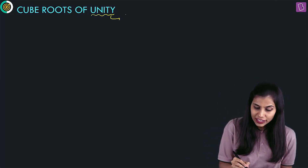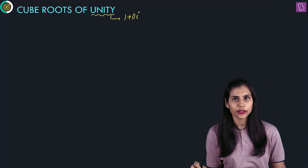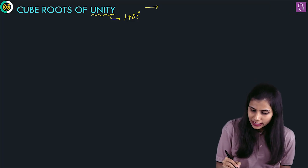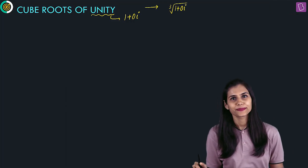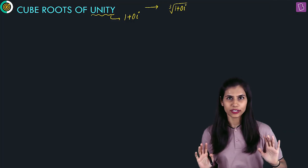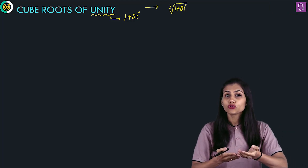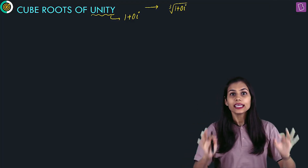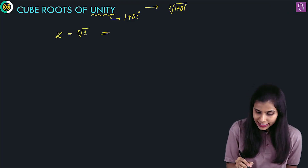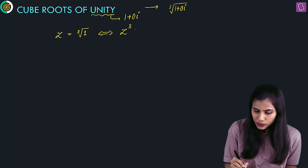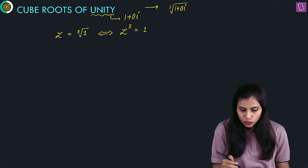Let's begin with one of the most popular topics, which is every examiner's favorite — cube roots of unity. Unity is 1, that is the purely real complex number 1 plus 0 iota. So I'm interested in computing the cube roots of 1 plus 0 iota. Just a while ago, we talked about fourth roots of unity, which were equivalent to the roots of z to the power 4 equals 1. Here also, finding cube roots of unity is equivalent to finding complex numbers which satisfy z cube equals 1.